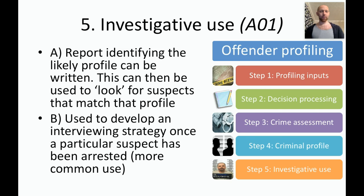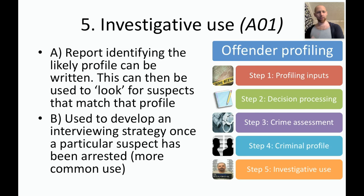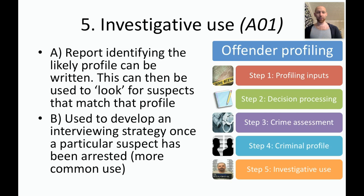Then we have step five: investigative use. We have this criminal profile — what do we actually do with it? We produce a report that identifies the likely profile of the offender. This can be used to narrow down suspects or look for suspects in the first instance, and it can also be used to develop an interviewer strategy. If we find a white male between 35 and 50, that narrows it down. Once we have the profile we can also start to develop an interview technique — if they're organized we may use a very different technique to a disorganized process.